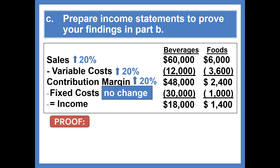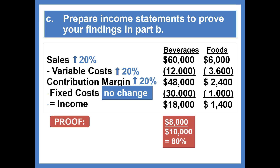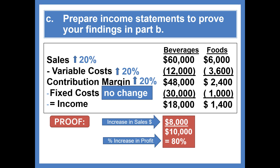Now let's verify: is this an 80% increase in profit for the beverage company and a 40% increase for the food company? The beverage company income went from $10,000 to $18,000 — that is an 80% increase. For the food company, profit went from $1,000 to $1,400, an increase of $400, which is in fact a 40% increase. So if you know the increase in sales, you can determine the increase in profit as a percentage.